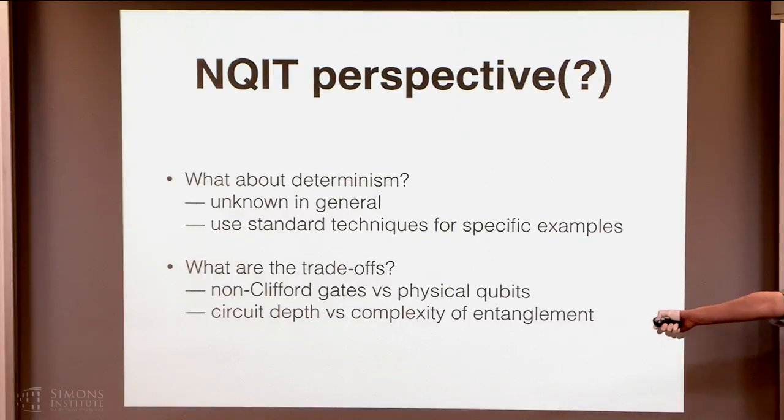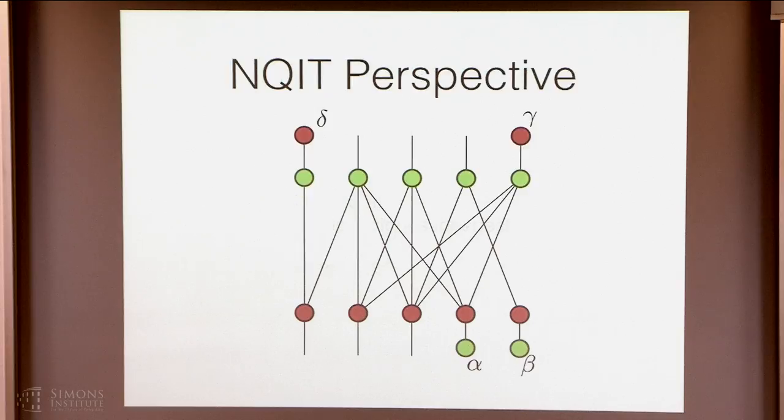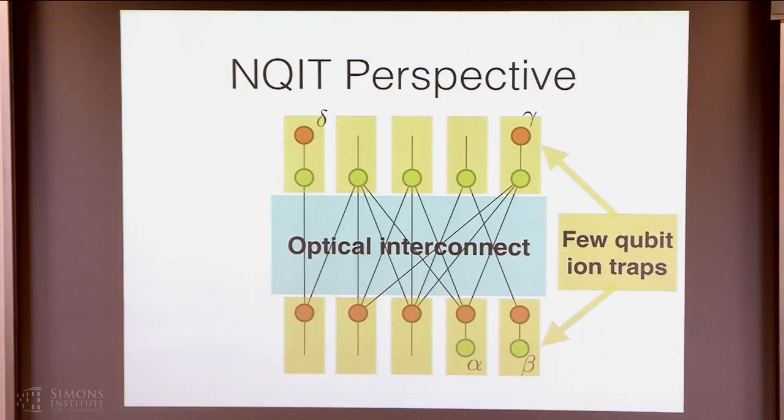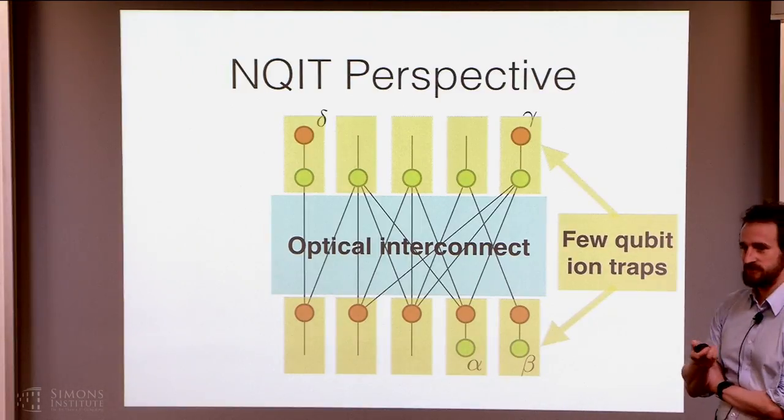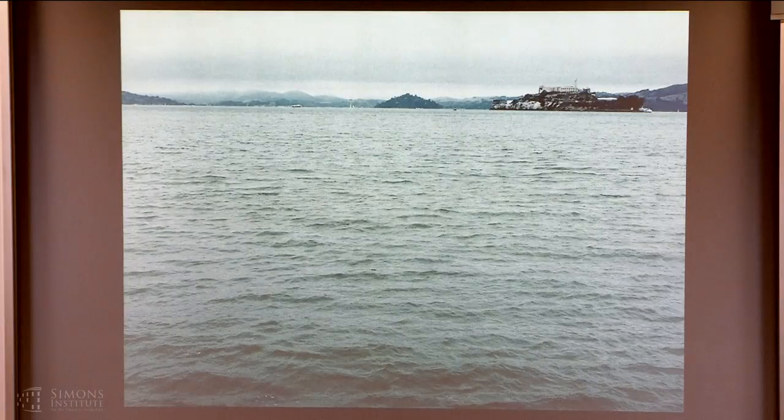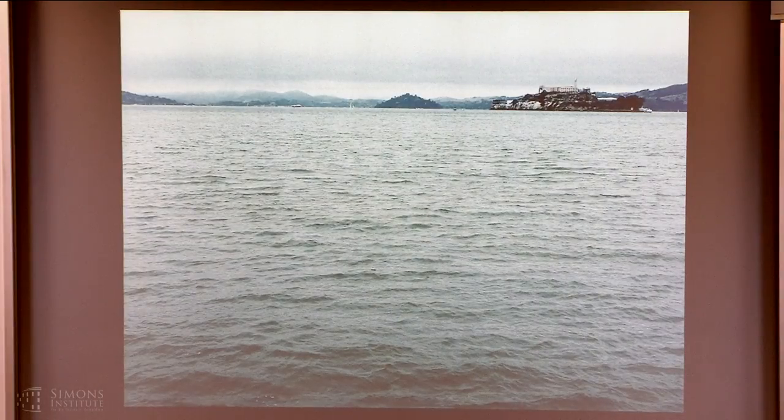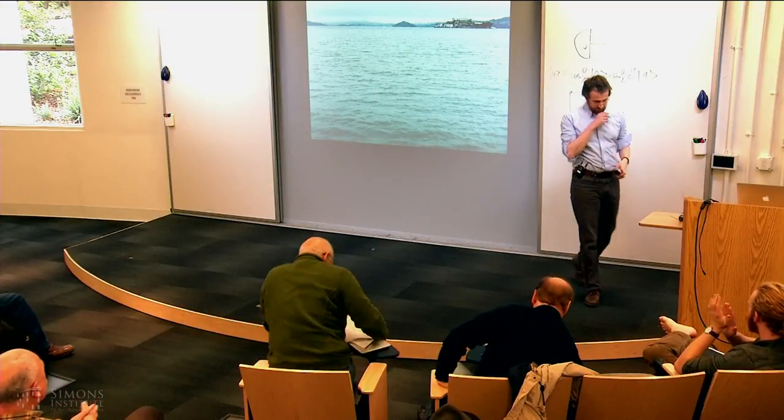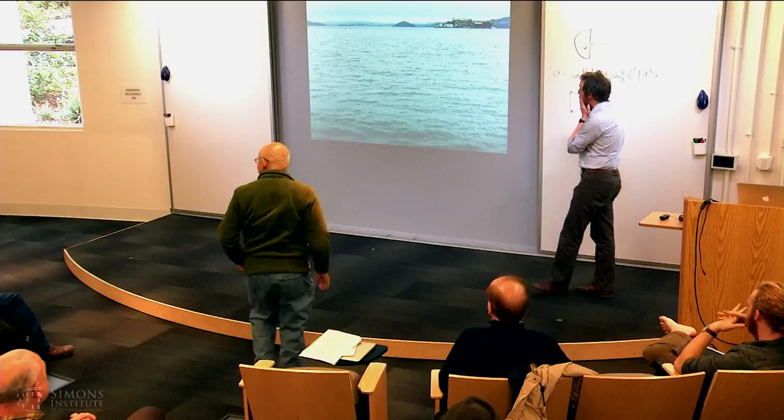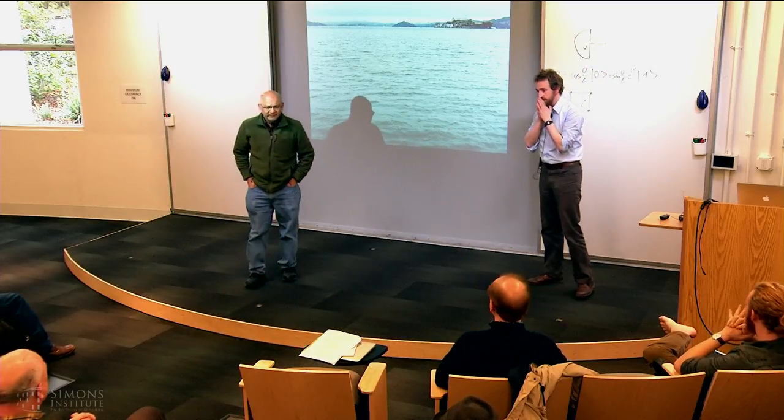And second of all, what is the trade-off? Everywhere I have a non-Clyfford gate, I pay for it with an extra two physical qubits. Okay, so that's one trade-off. The second trade-off is the depth of the circuit is paid for essentially in the complexity of this interconnect. So we, again, don't know what those trade-offs are at the moment. Okay, but I hope it was fun to see that you can do something useful. All right, thanks everyone.